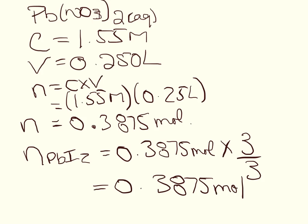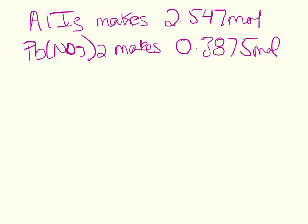Now we compare the two numbers. Aluminum iodide would make 2.547 moles of lead iodide, and lead nitrate would make 0.3875 moles. Lead nitrate is our limiting reagent and aluminum iodide is our excess reagent. So the number of moles of lead iodide we actually produce is 0.3875 moles.